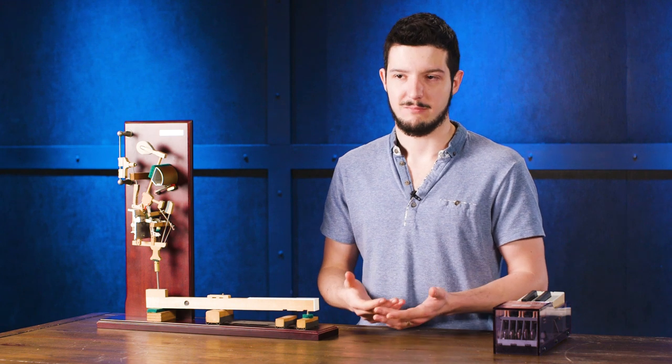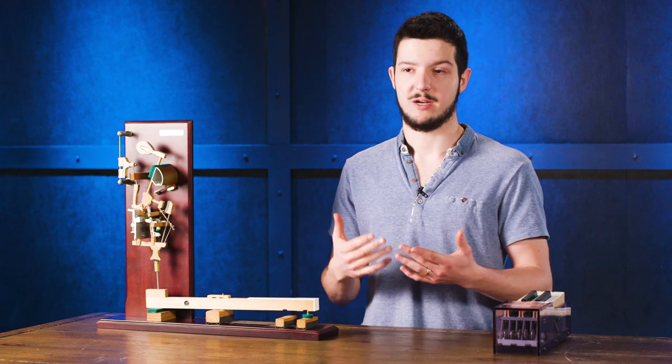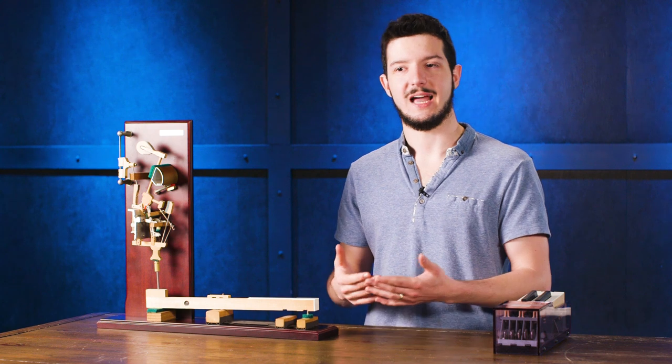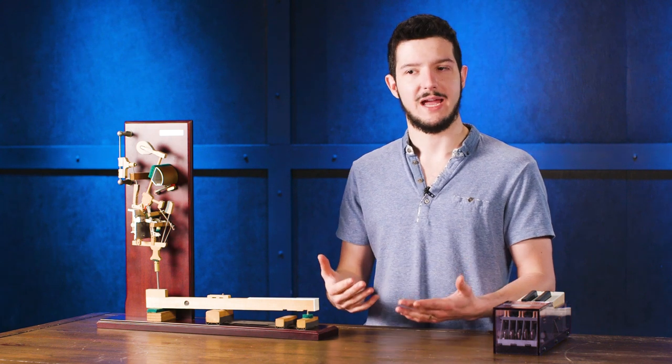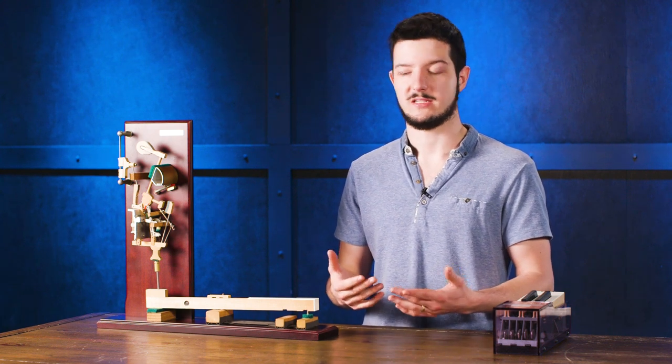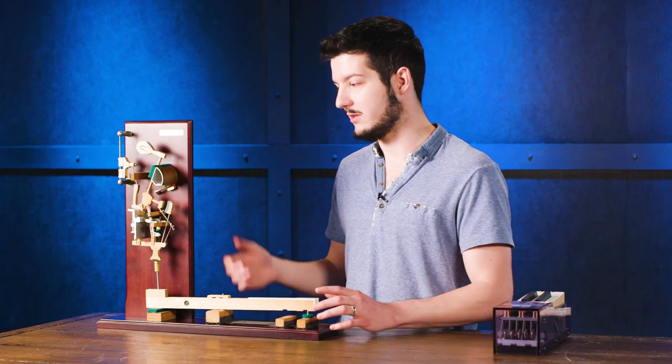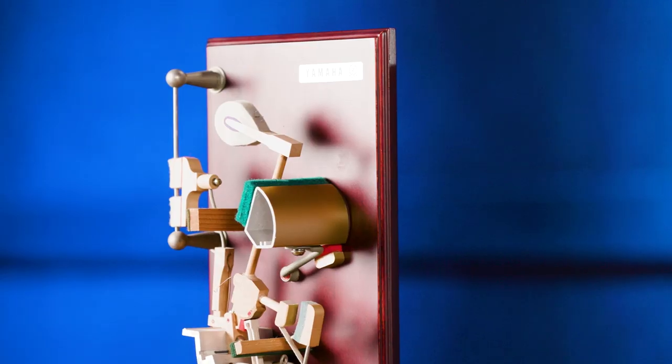The keybed also includes the escapement mechanism. And that is a mechanism on a piano, on an acoustic piano, that allows the hammer to fall away from the string after the key is pressed. So I want to show you that quick with the model that we have here. So you can see when you press a key.